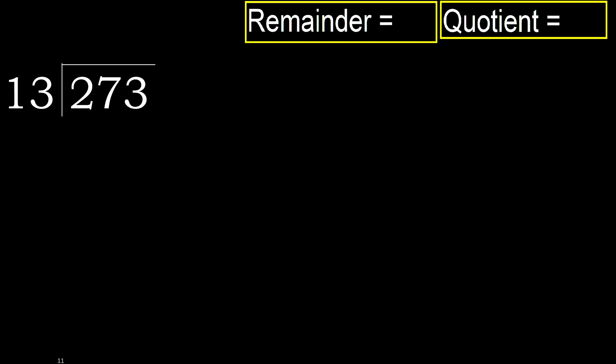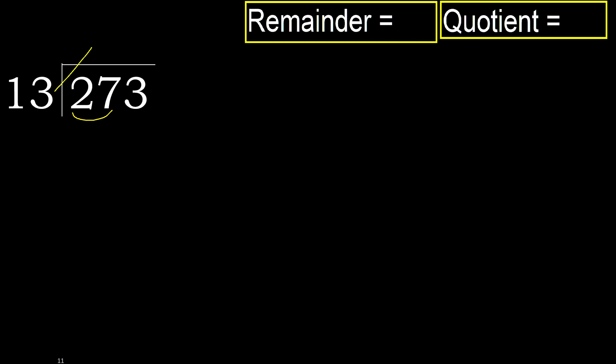273 divided by 13. 2 is less, therefore next: 27 is not less, therefore with 27. 13 multiplied by which number is nearest to 27?